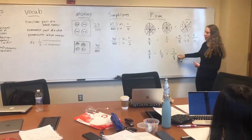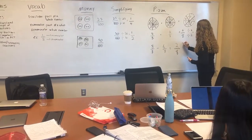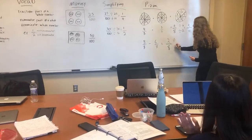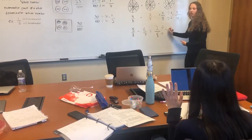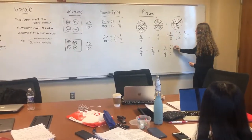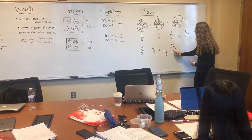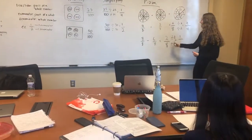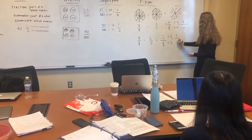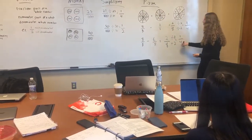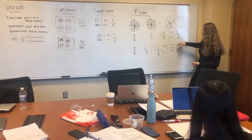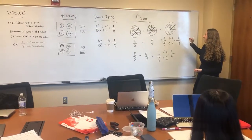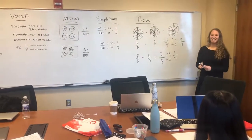Let's do that one more time with two eighths. What's one factor we could divide both two and eight by? Two. So two divided by two gives us one, and eight divided by two gives us four. So we have one fourth of the pizza left. And when we put those together, we have the total pizza of eight pieces.